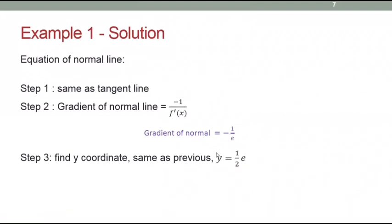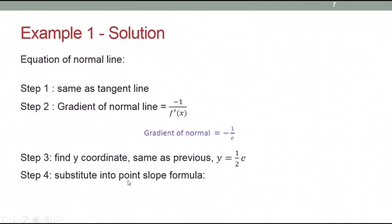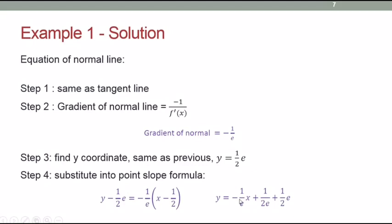Step 3: find the y-coordinate. With x = 1/2, substitute into the original equation to get y = e/2. Step 4: substitute into the point-slope formula y − y₁ = m(x − x₁), where m = −1/e. This gives the equation of the normal line.